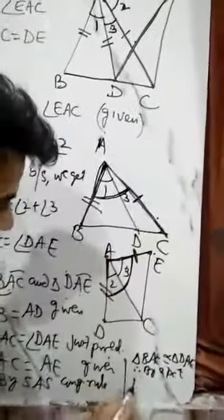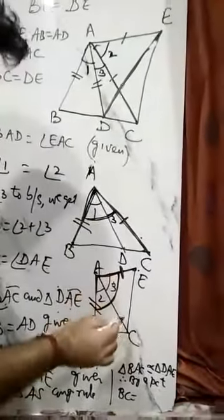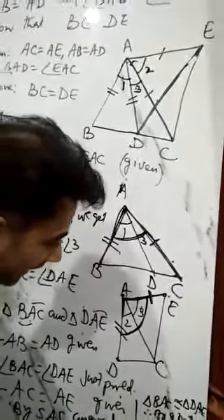By CPCT, corresponding parts of congruent triangles, side BC will be equal to DE. BC equals DE. Hence proved.